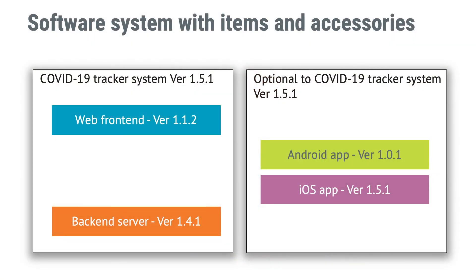I strongly recommend you invest time in defining your software system accurately. It is essential to understand the boundaries of your system to manage software risk management, future releases, and maintenance properly. The example we just looked at could look completely different depending on how you define your software system. The front-end and server might work as a software system on their own, with the apps being optional. The same goes with embedded systems — a software tool to read engineering data from a USB port does not need to be part of your medical device software system. IEC 62304 does not give directions about this, but you may find guidance in regulations.